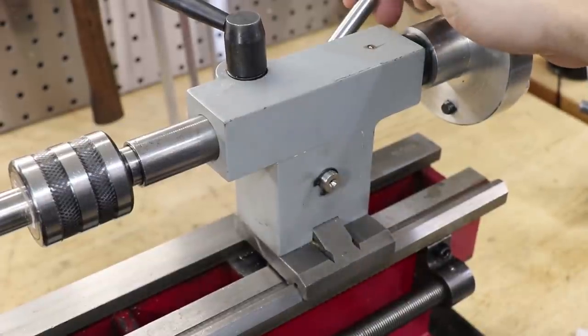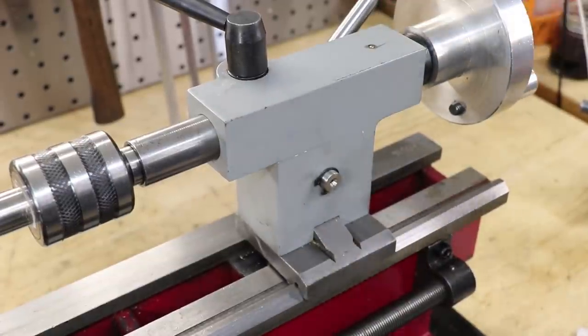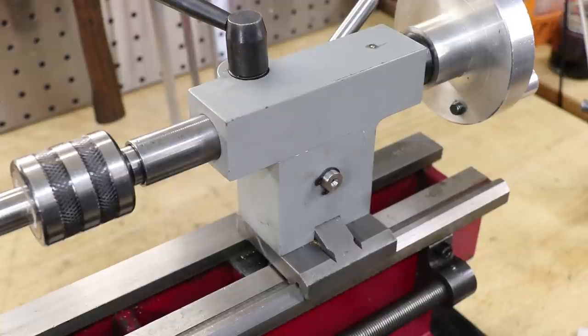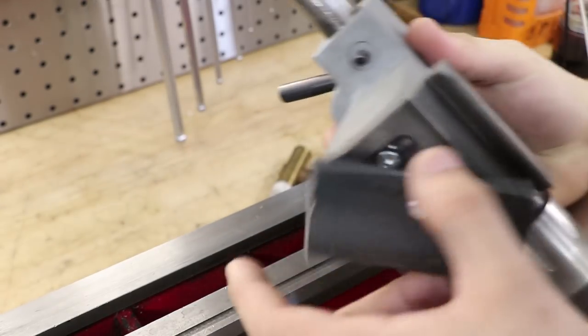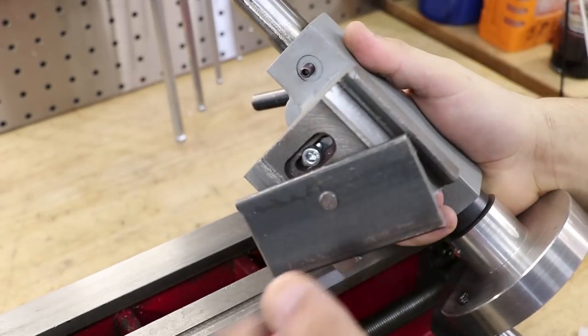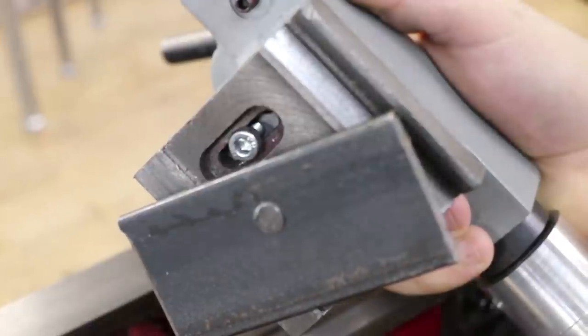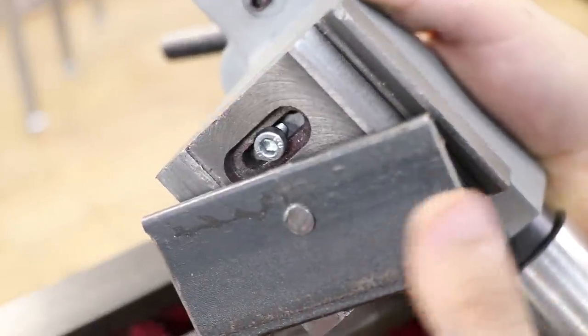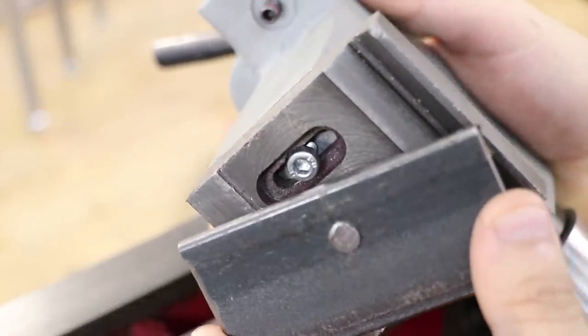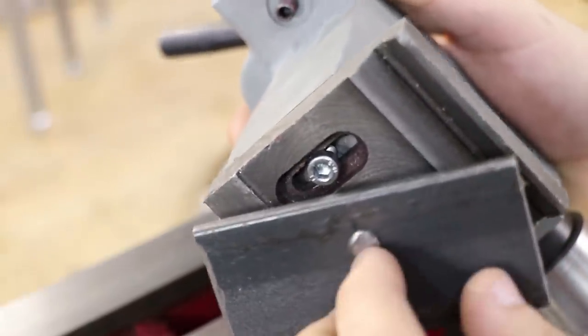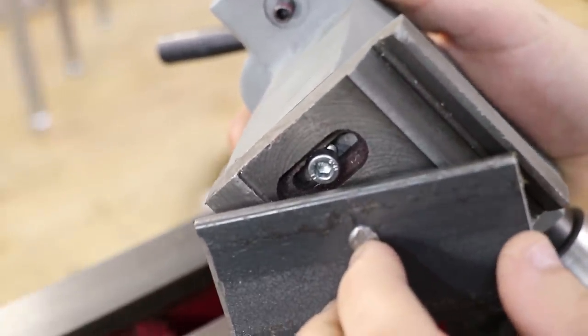Most lathes have a screw that you can adjust to pull it back into alignment but that's not the case on a mini lathe. These mini lathes don't have any fine adjustment screws and the locking bolt is located on the bottom of the tailstock and that makes the process of properly aligning it a pretty difficult thing to do.